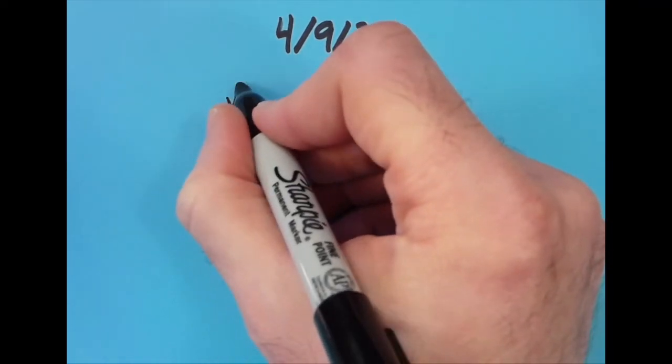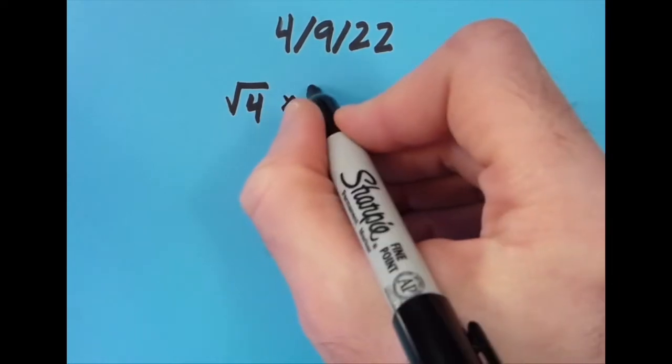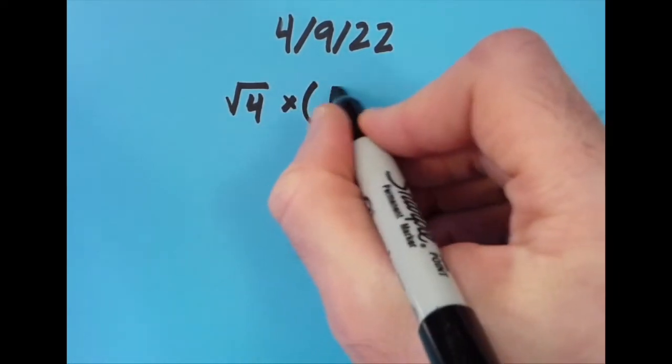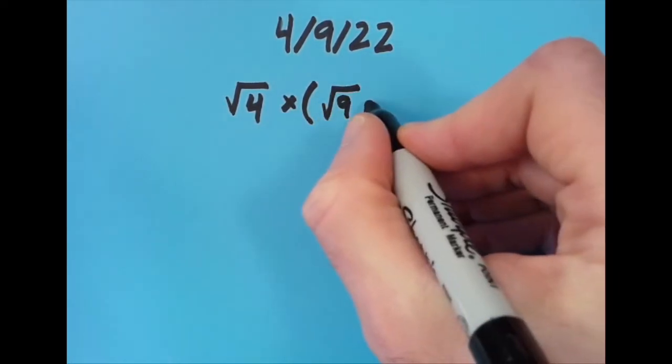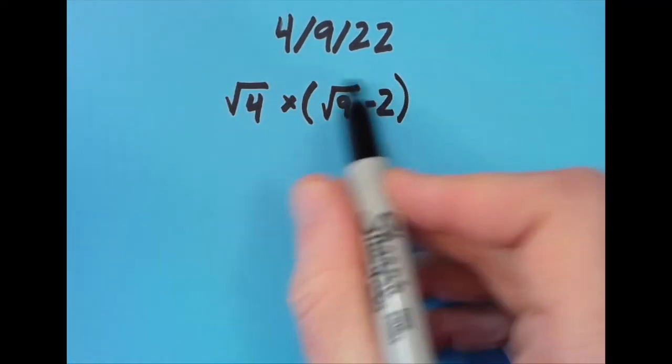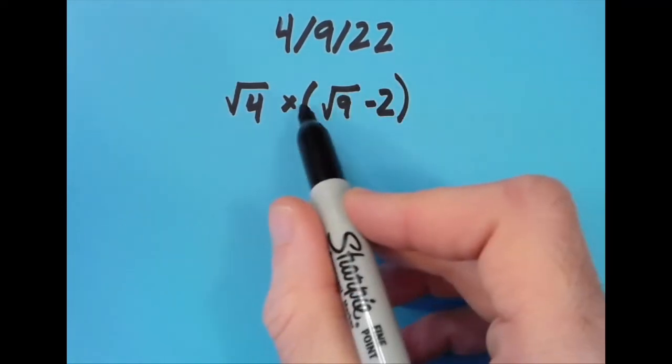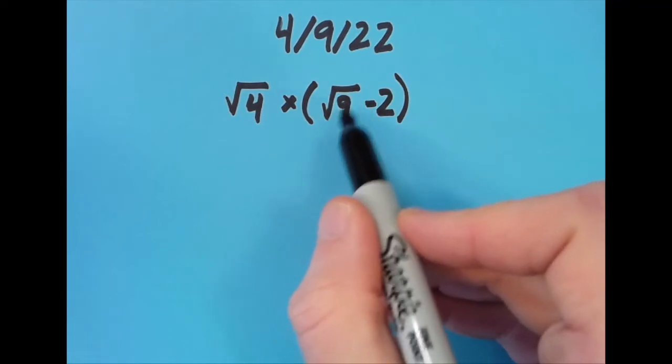What I came up with was √4, which is 2, times (√9 - 2). I put this in parentheses because I want to multiply all this by 2.